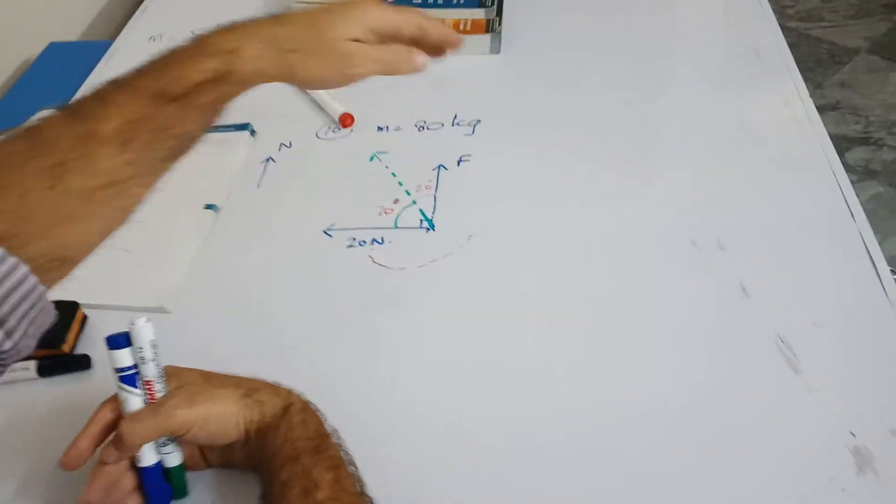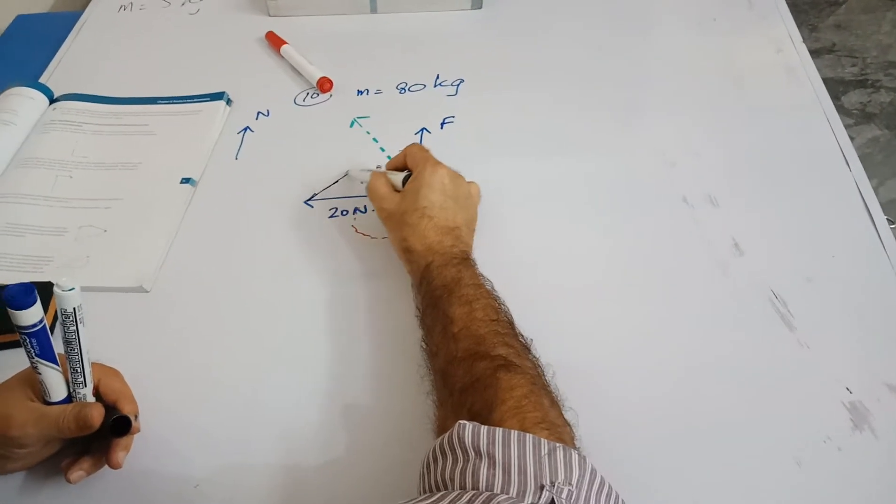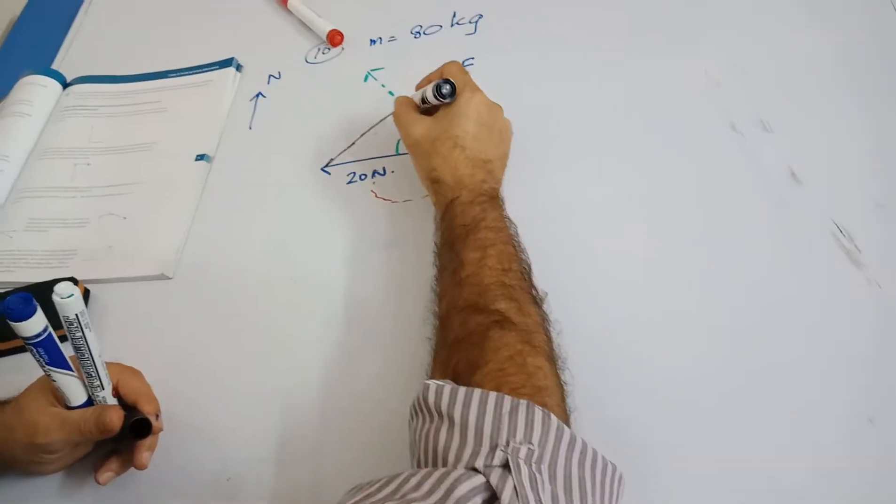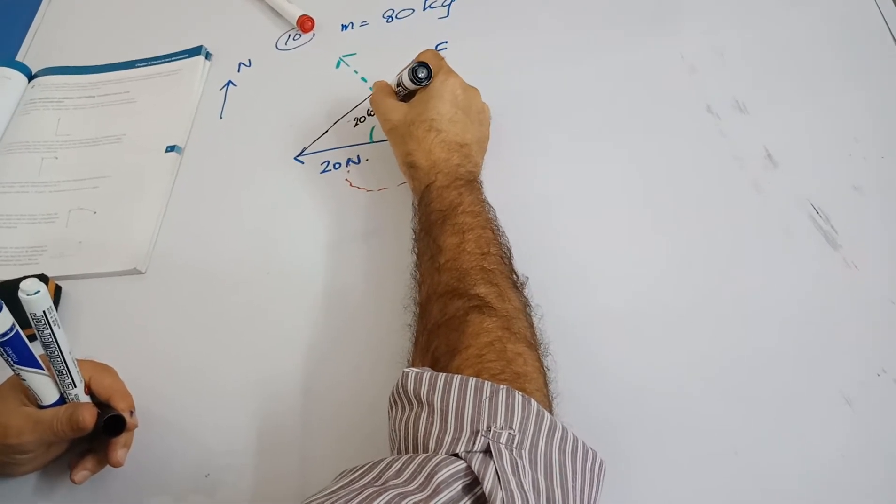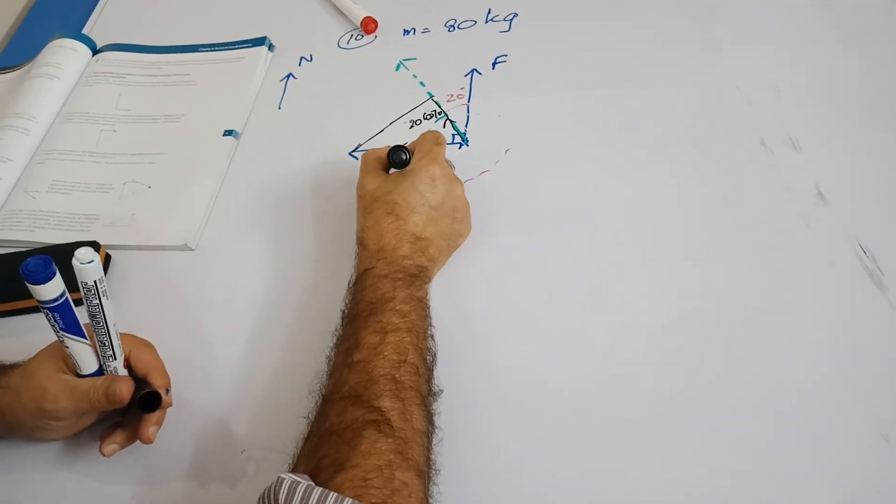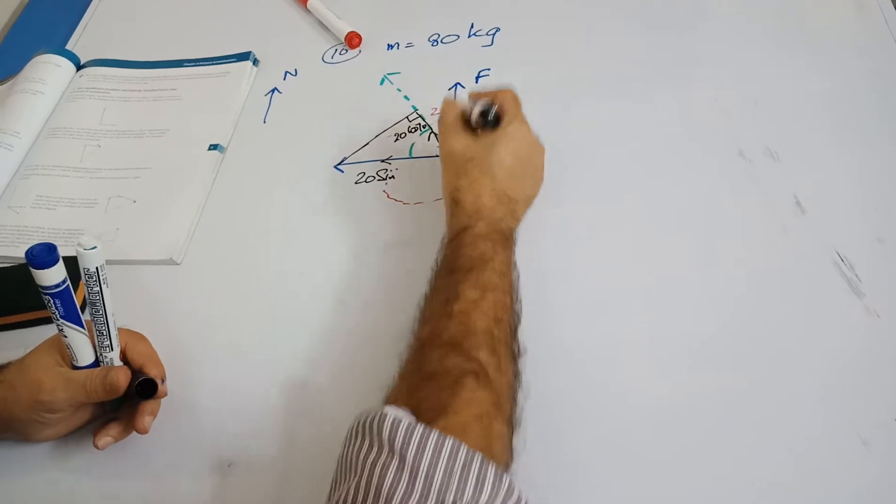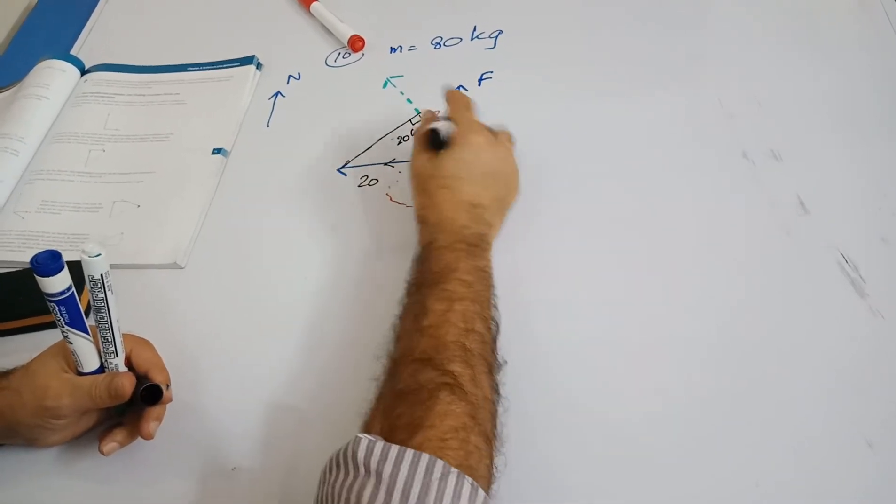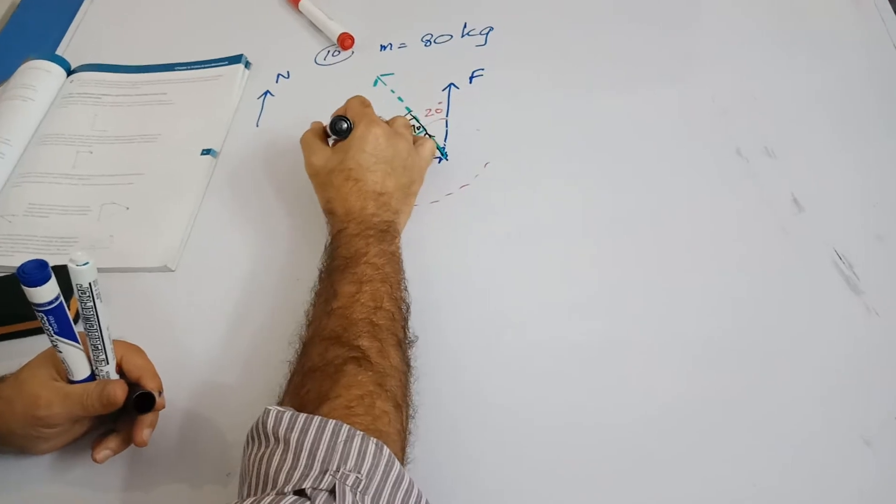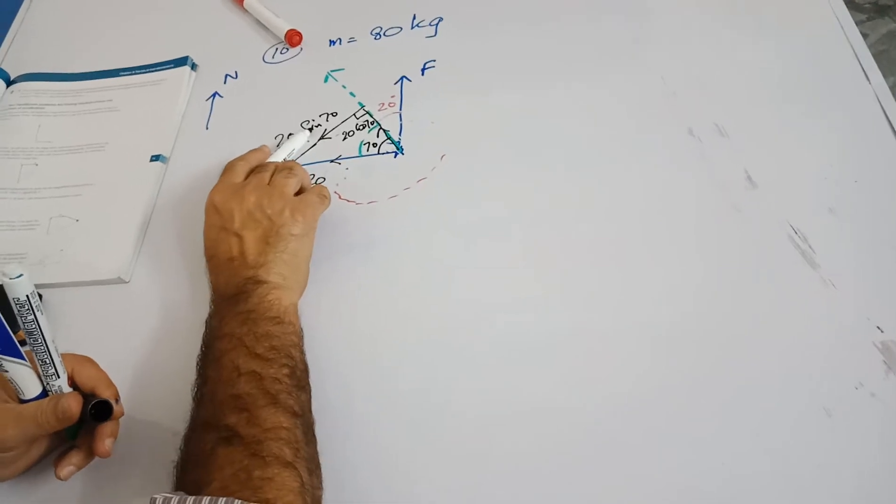First of all, this is going to be resolved like this. This is 20 cos 70 and this one is 20 sine 70. Oh sorry, sorry. This is the right angle and this was basically, I'm making silly mistakes. This is your 70 degrees, so this is 20 cos 70 and this one is 20 sine 70. Opposite to this angle there has to be sine, and adjacent to this angle there has to be cosine.